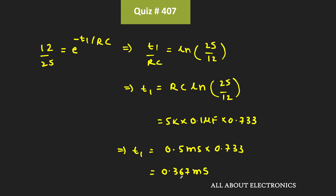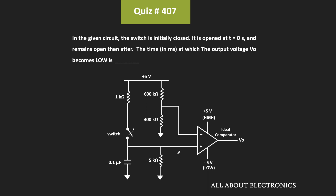At this time t1 = 0.367ms, the voltage at the non-inverting terminal equals the voltage at the inverting terminal. Just after that, we see the transition in the output voltage of the comparator — the output of the comparator becomes low at t = 0.367ms.